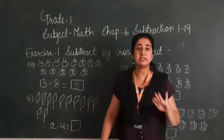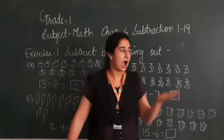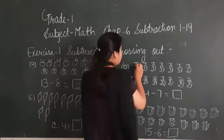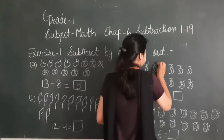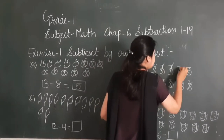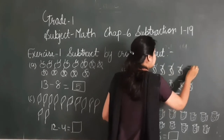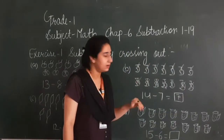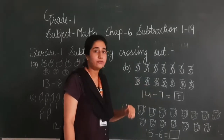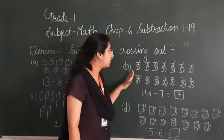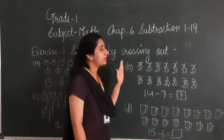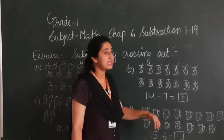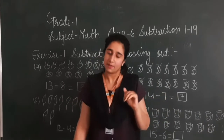Now after giving 7 to my friend, how many are left with me? Let's count: 1, 2, 3, 4, 5, 6, 7. After giving 7 to my friend, 7 are left with me. Before I was having 14. Among those 14, I have given 7 to my friend. After giving 7, 7 are left with me.